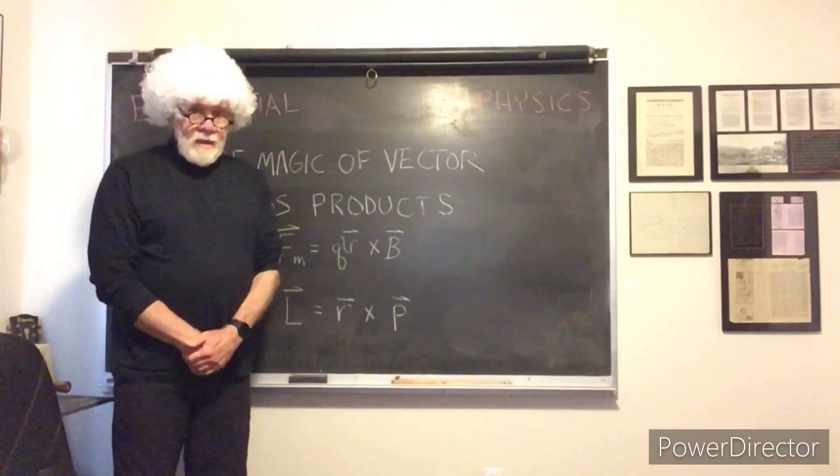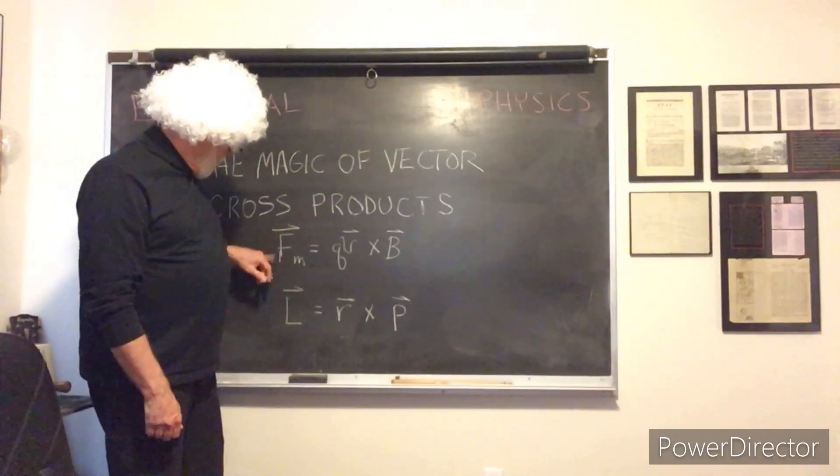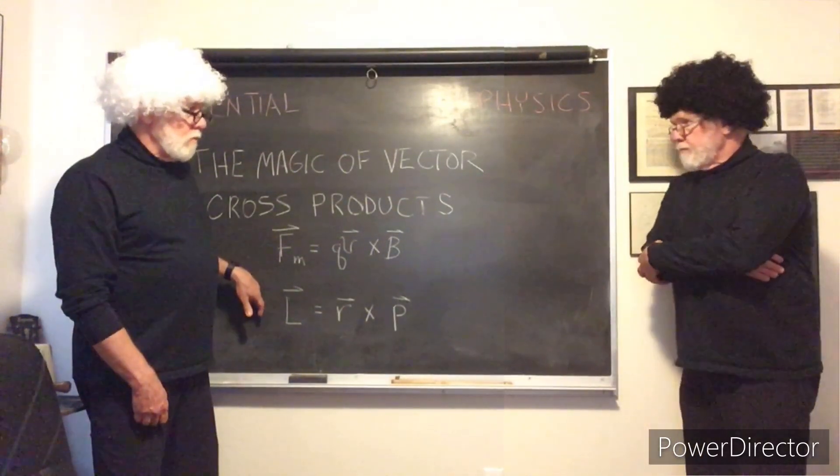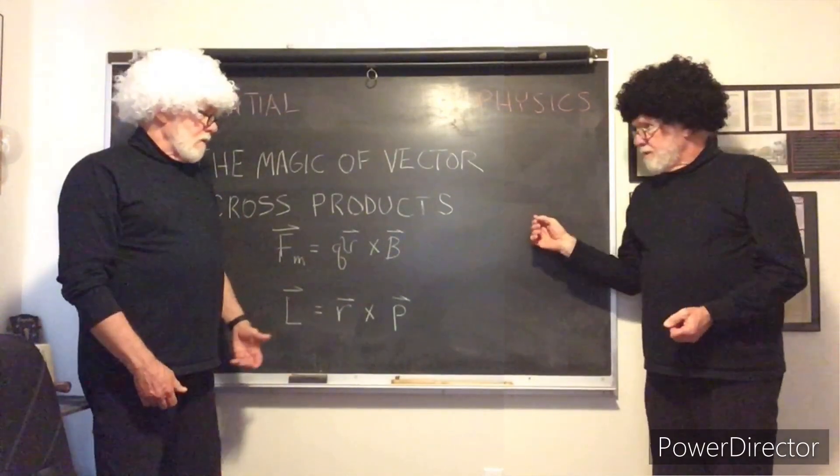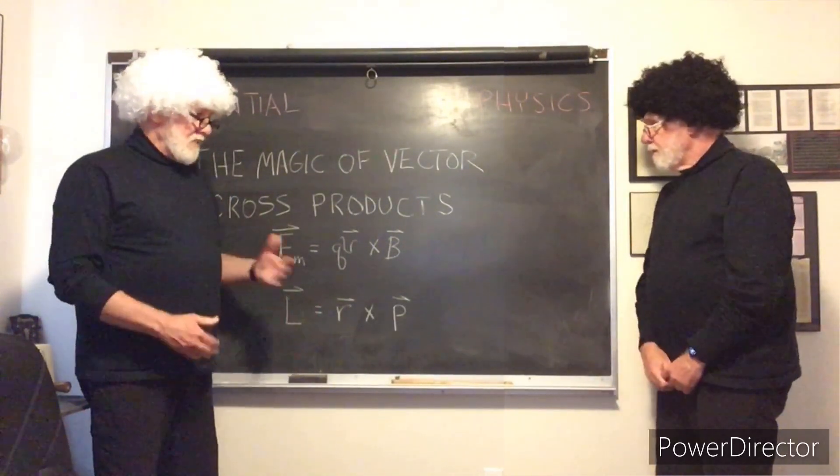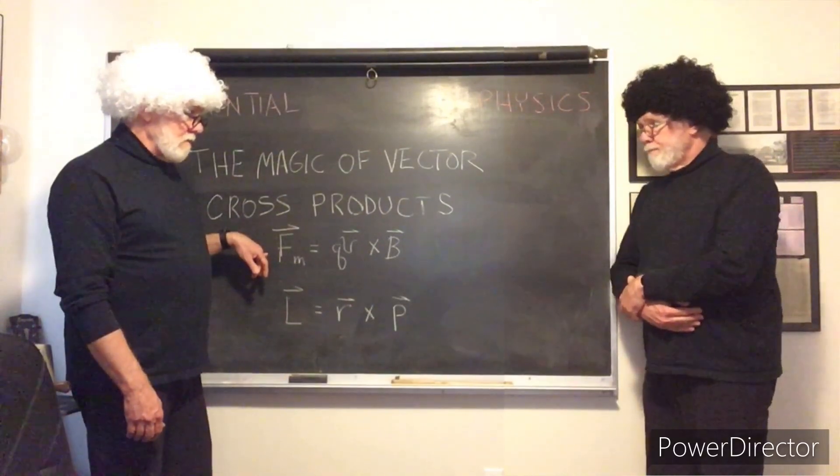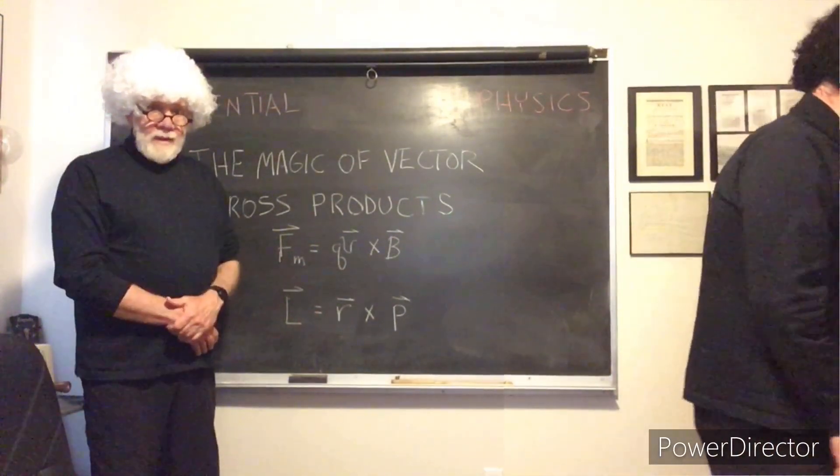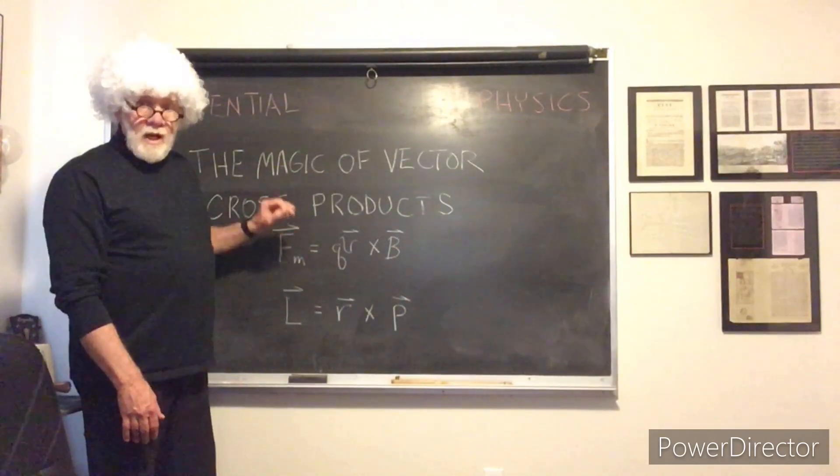All right, we're back. And as I said, we're going to be doing The Magic of Vector Cross Products. Two different ways we're going to look at it. And I'm going to explain what each one of these is. I was going to ask you to go and actually set up the equipment for demonstrating this cross product. Could you do that? Yeah, sure. Great, thank you. All right, anyway, I'm going to explain this right now. And I'm going to put up some neat diagrams. I'll do that very quickly.